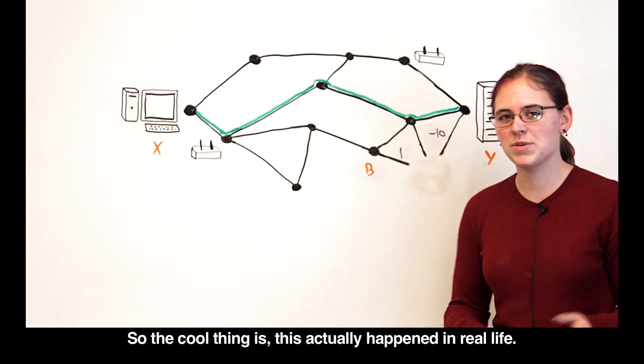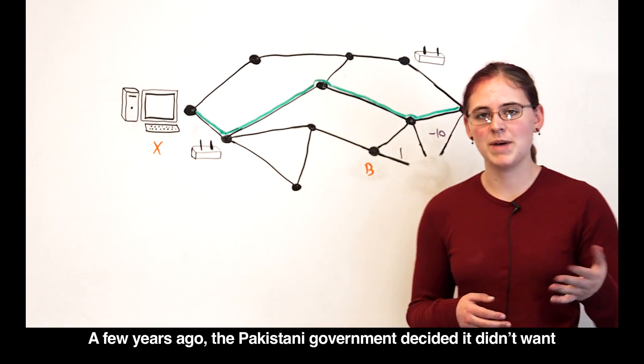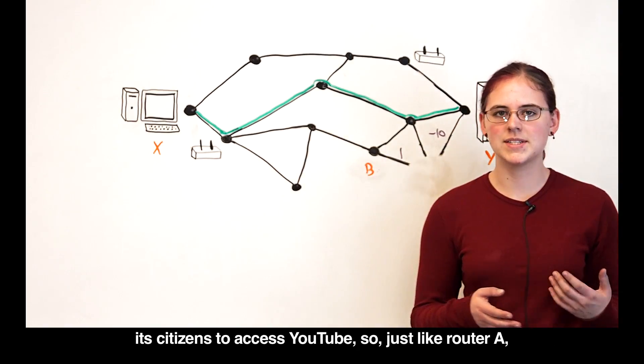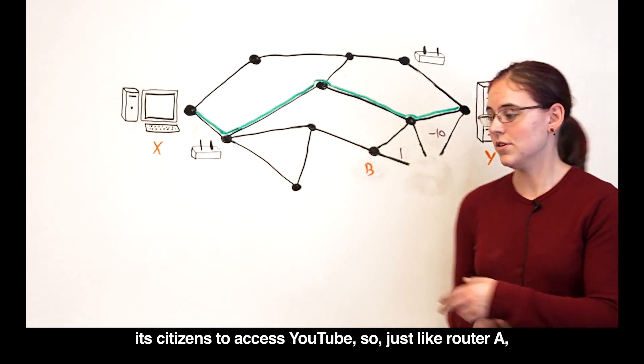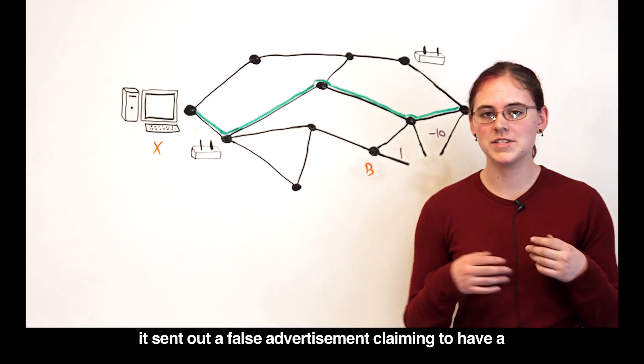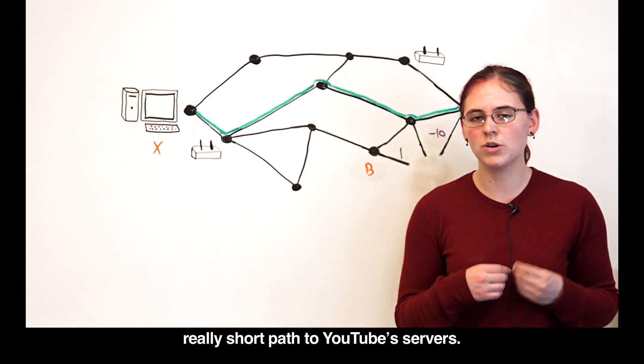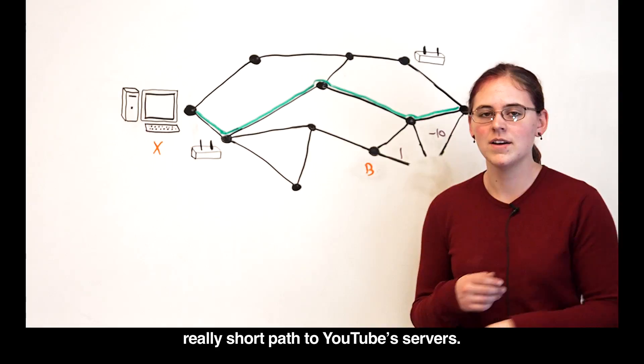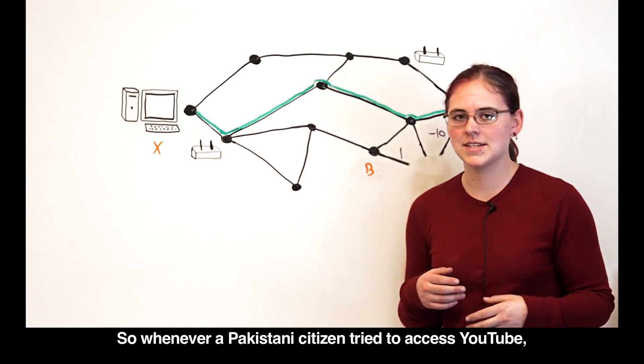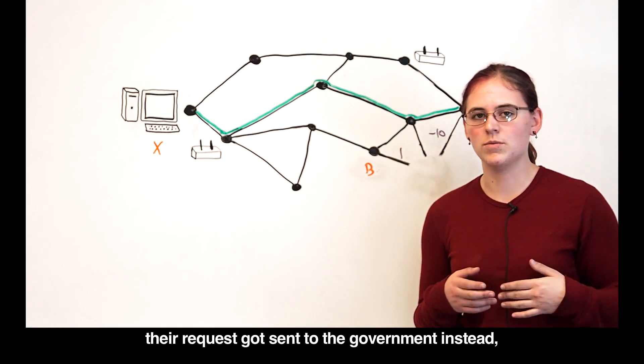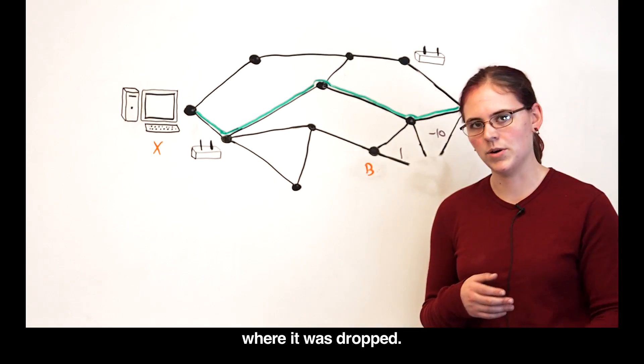The cool thing is, this actually happened in real life. A few years ago, the Pakistani government decided it didn't want its citizens to access YouTube. Just like router A, it sent out a false advertisement claiming to have a really short path to YouTube servers. Whenever a Pakistani citizen tried to access YouTube, their request got sent to the government instead, where it was dropped.